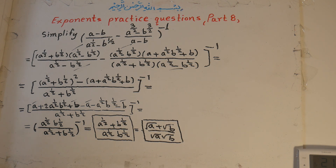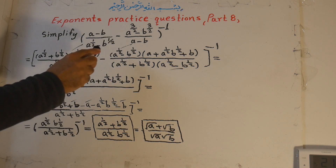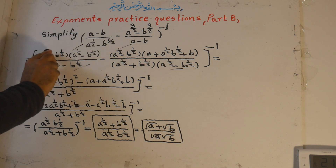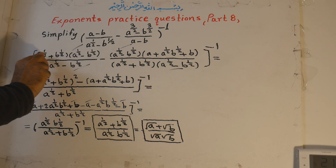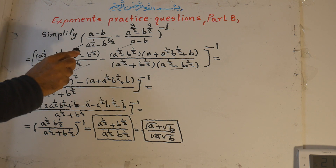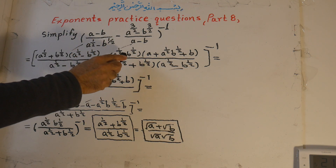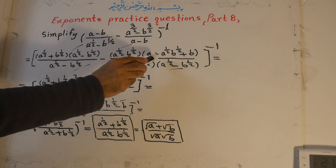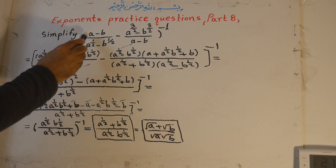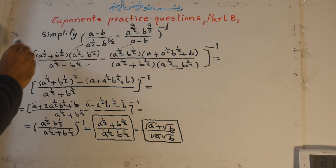To repeat: simplify (a minus b) over a to the power of 1/2 times b to the power of 1/2 minus a to the power of 3/2 minus b to the power of 3/2, over a minus b, all to the power of negative 1. We factor this into two factors: a to the power of 1/2 plus b to the power of 1/2, times a to the power of 1/2 minus b to the power of 1/2 over the same denominator, minus and how we factor — a to the power of 1/2 minus b to the power of 1/2 — times a to the power of 1/2 plus b, all over a to the power of 1/2 plus b to the power of 1/2, times a to the power of 1/2 minus b to the power of 1/2.